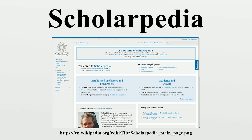Authorship. To ensure that the articles are written by experts, authors of the various articles in Scholarpedia are either invited by the editor-in-chief or other curators, or selected by a public election. For example, Jimmy Wales and Larry Sanger were nominated for the article on Wikipedia. As of May 2009, the list of authors included four Fields Medallists and 16 Nobel Prize winners.